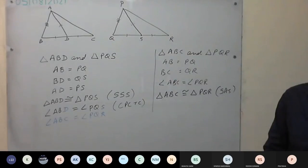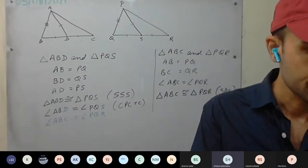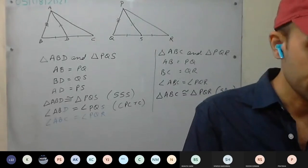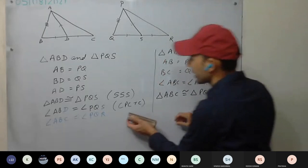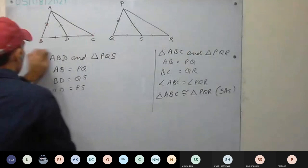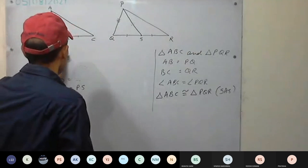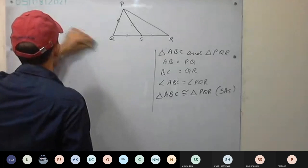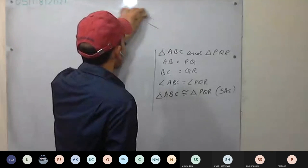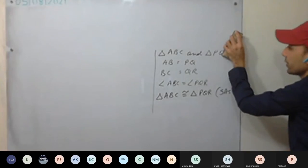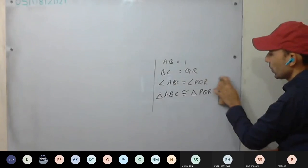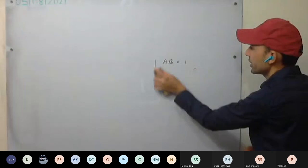We have proved them to be congruent. Has everyone understood? Yes, sir. Let's try the 9th one now. Everyone try the 9th one while I rub the board. Read the question properly — information is provided in the question. Read it and try. See how you're going to prove them congruent. It is given two lines are parallel. When two lines are parallel and a third line cuts them, use the properties of parallel lines — mainly alternate interior angles.